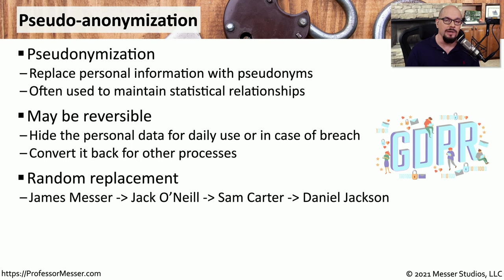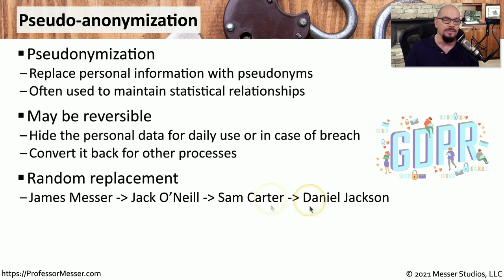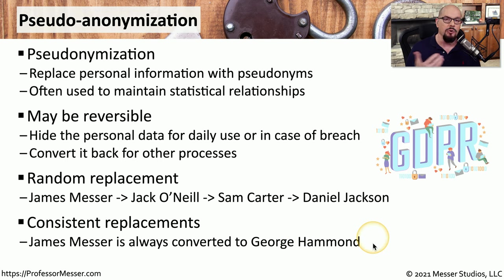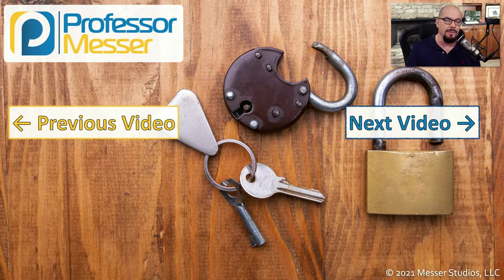One approach is to present a different name on the screen each time a record is accessed. A record associated with my name might show the name Jack O'Neill on the screen; if the record is accessed again later in the day, the name might be Sam Carter; and if someone accesses it later that night, they might see Daniel Jackson. All of those refer back to my name, but they're different each time the record is displayed. If you need consistency, you might use a consistent replacement — meaning each time someone accesses a record with my name in it, it will constantly show the name George Hammond, no matter who brings up the record or how many times.